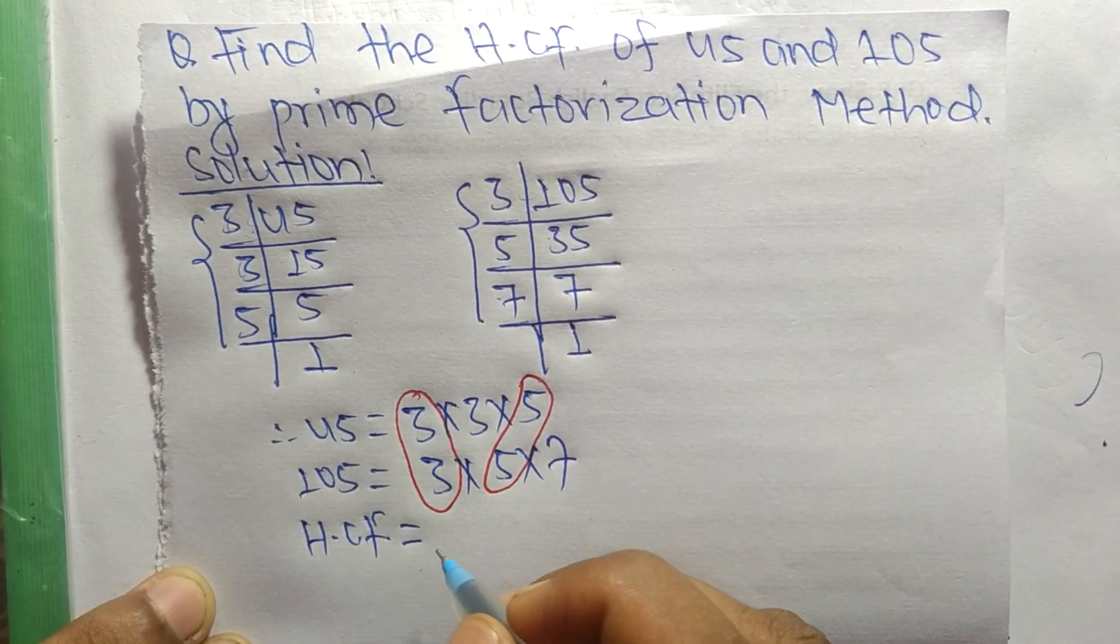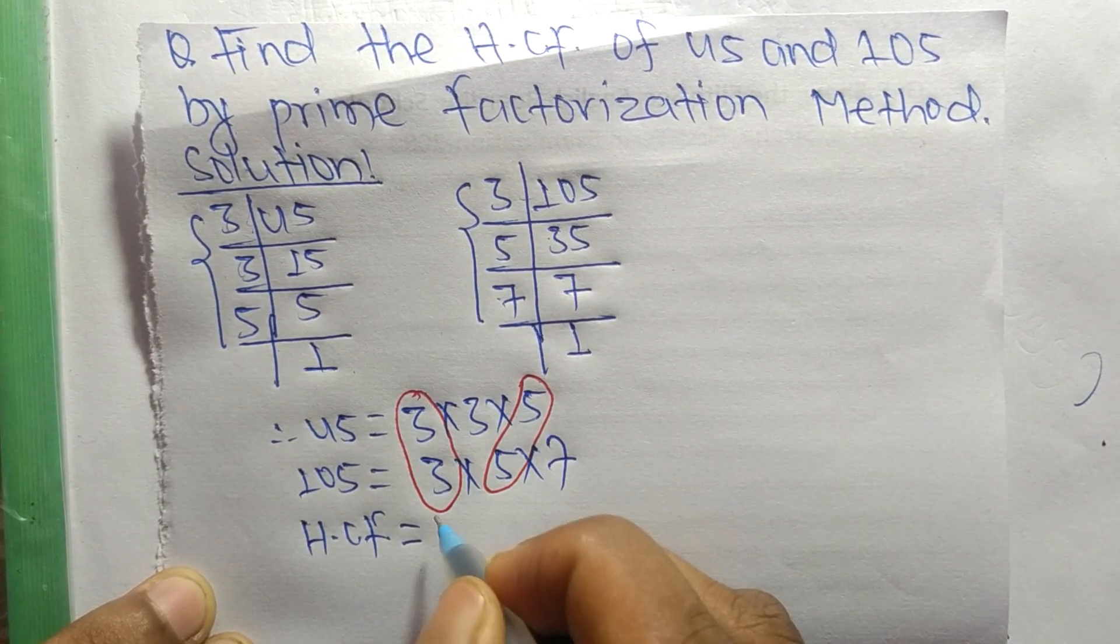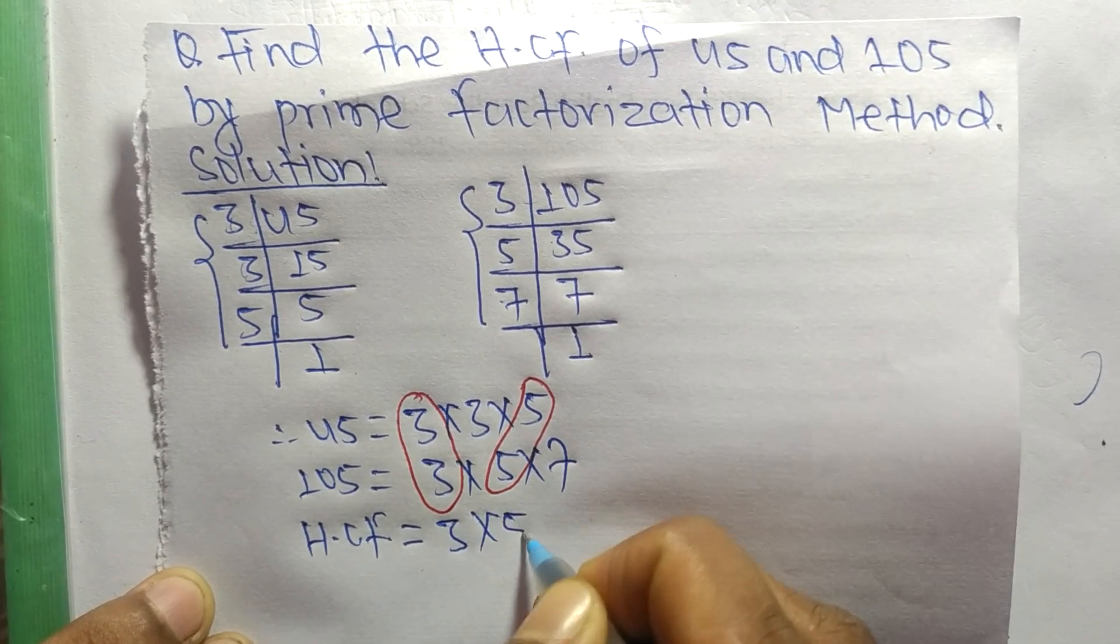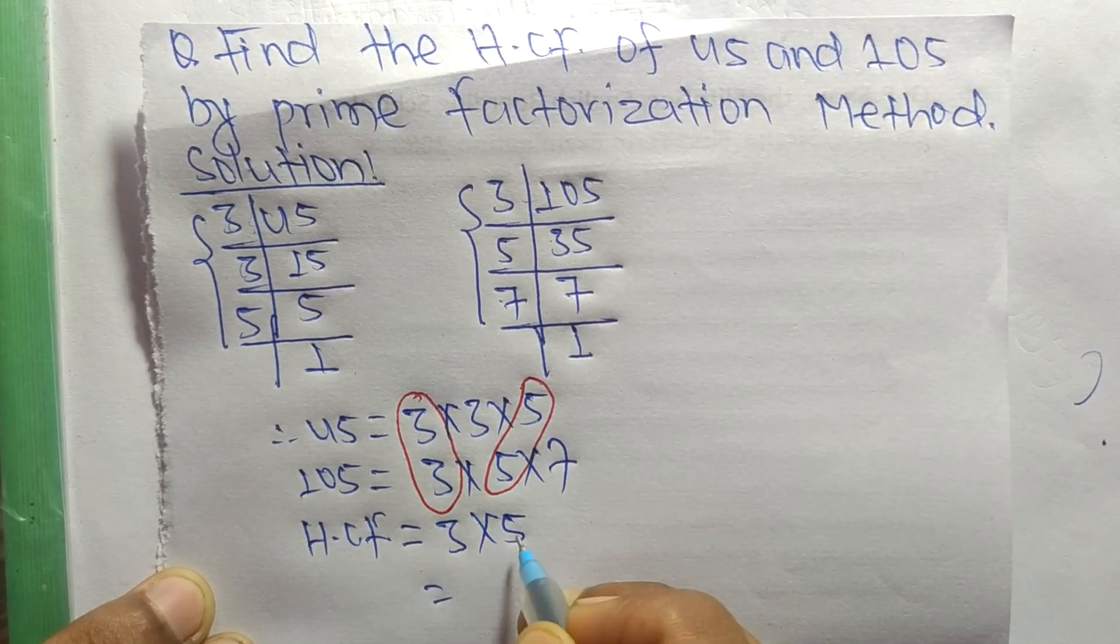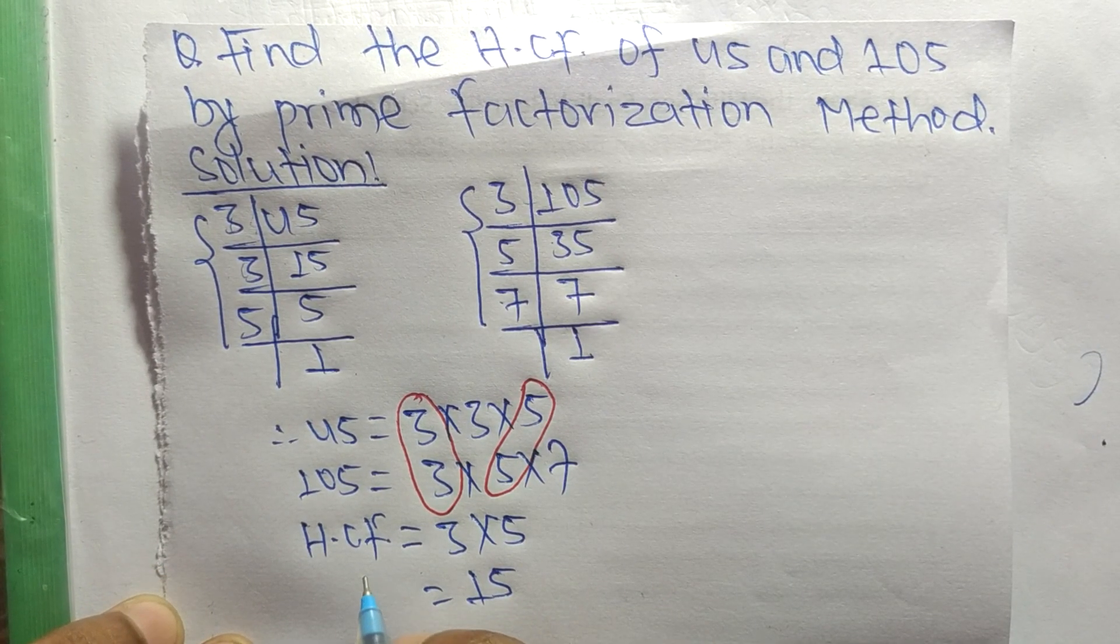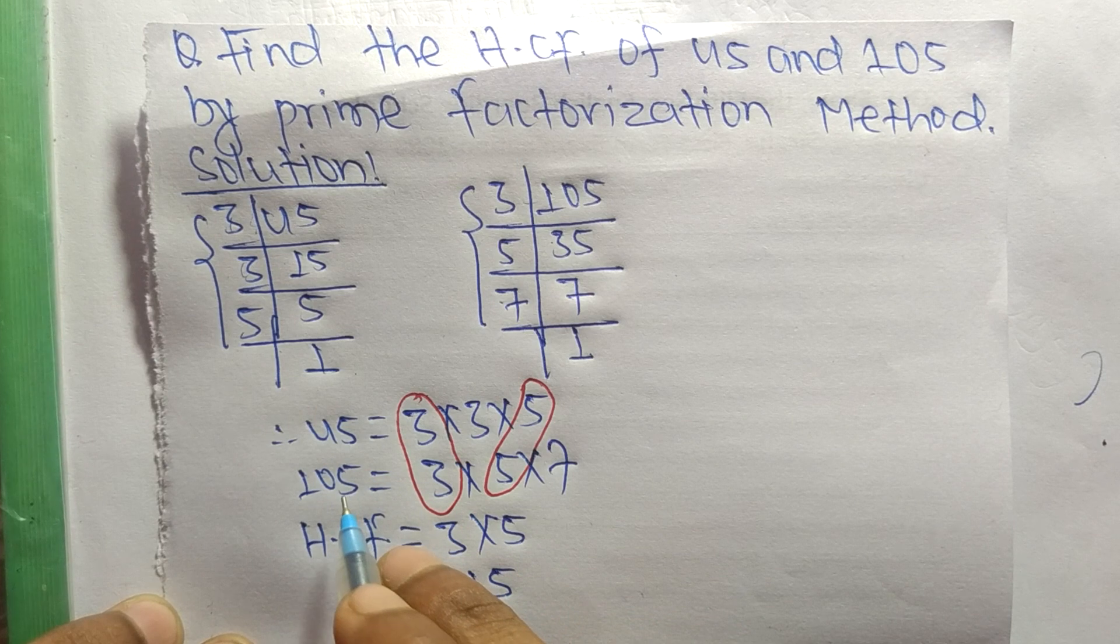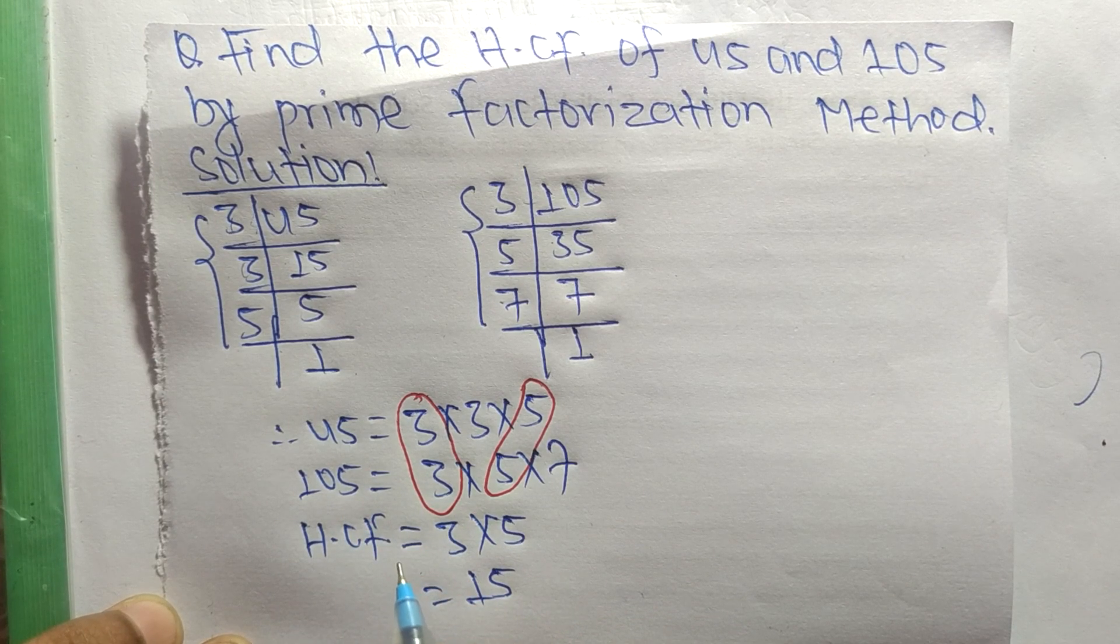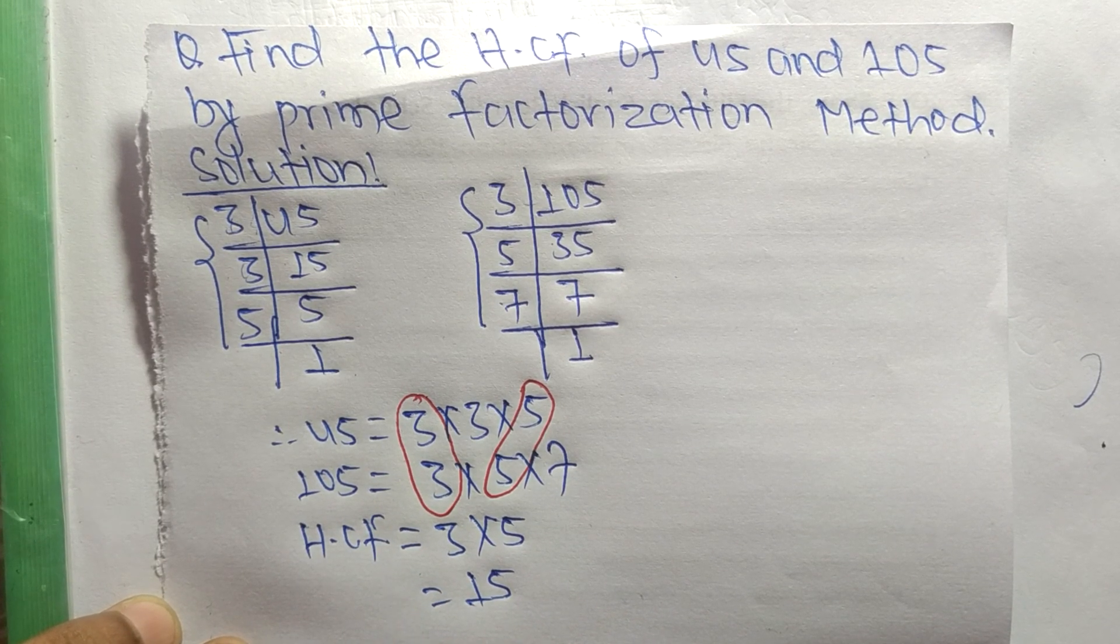equal to the product of common factors, which are 3 and 5. So 3 times 5 equals 15. Therefore, 15 is the HCF of 45 and 105. Thanks for watching.